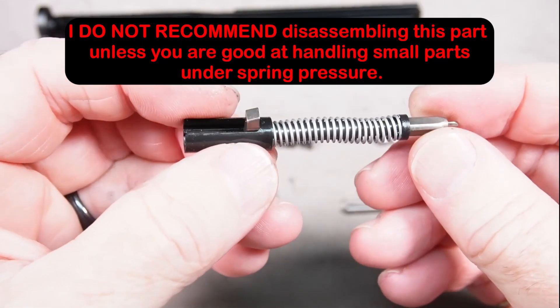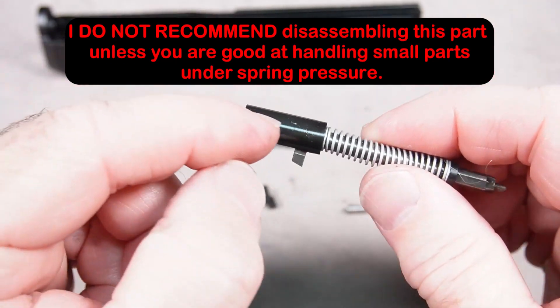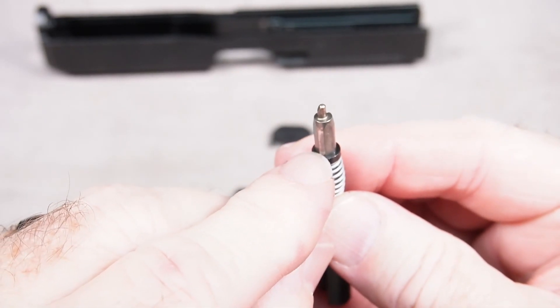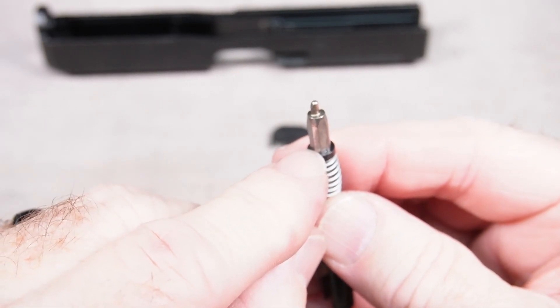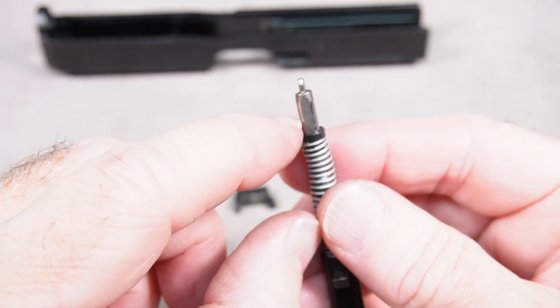Now we have basically the firing pin assembly here. This is the firing pin, firing pin spring. This is actually called the spacer sleeve. And this black piece here, this is actually two pieces. They're called spring cups. This is what actually keeps the spring from coming off the firing pin.